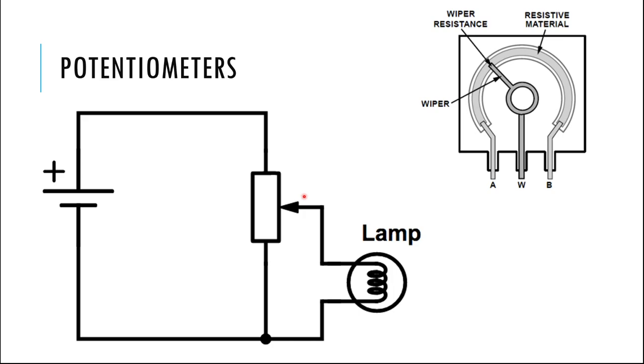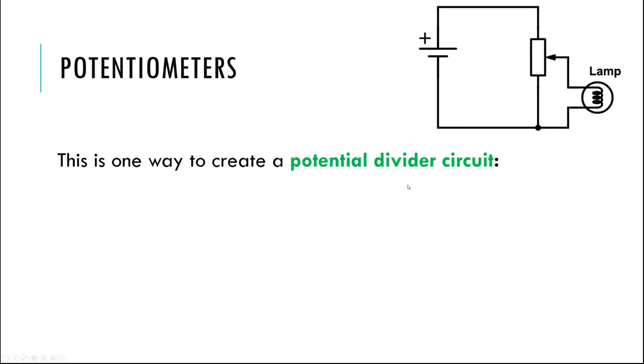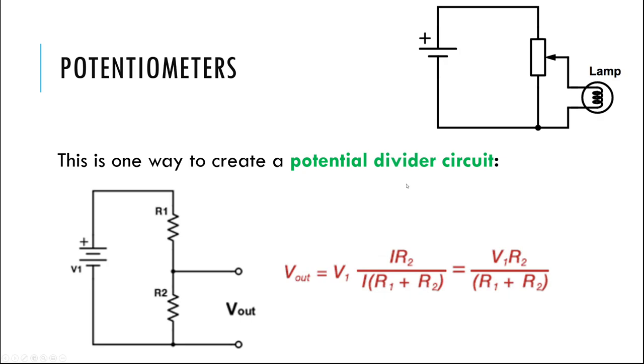This here would be pin W in the picture, this arrow. This arrow represents that wiper where you can imagine this arrow moving up and down to make a short and a long resistor or a long and a short resistor. It's going to split this whole resistance up into two pieces, and the important part of that is we can essentially create a potential divider here.